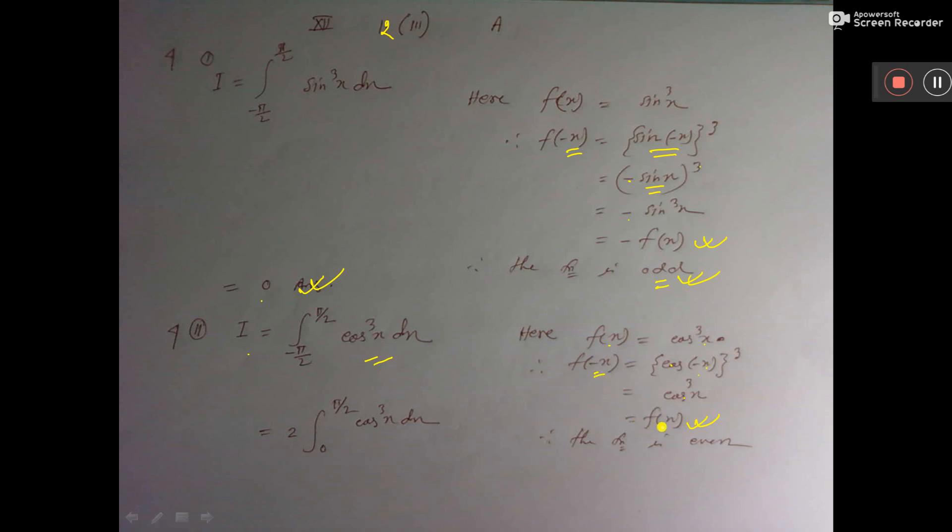So we have got f minus x equal to f(x). Therefore the function is even. Now for even function the rule is minus a to a f(x)dx is 2 into 0 to a f(x)dx. So here will be 2 into 0 to a f(x)dx. And this is only 0 to proof. So it has come. The proof has come.